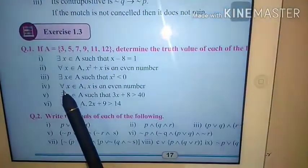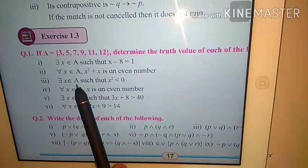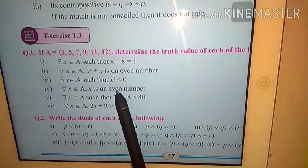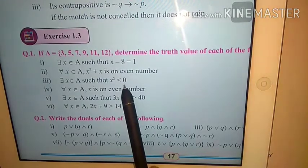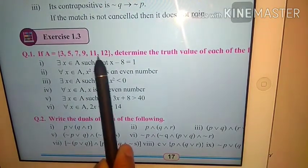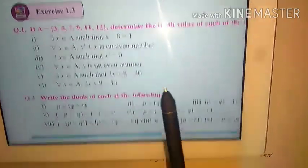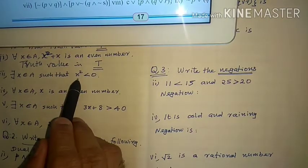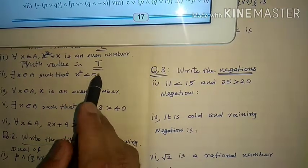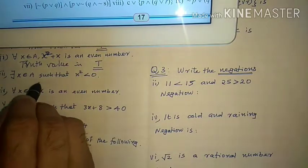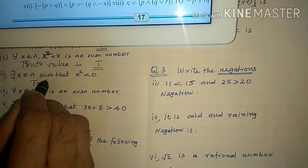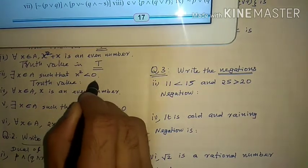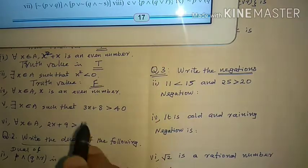Now third question: there exists x belongs to A such that x² is less than 0. Less than 0 means negative numbers. But not even a single negative number is in set A. So this statement is false. Truth value is F.